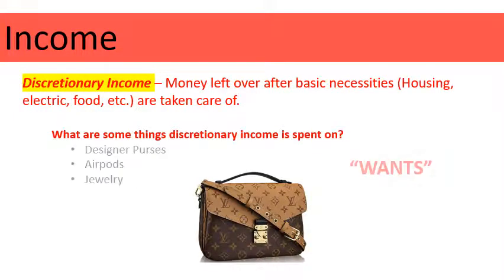Now let's compare disposable income to discretionary income. They sound similar but they're different. Discretionary income is money left over after the basic necessities — housing, electric, food, those types of things — after those are taken care of and paid for. Discretionary income is what we can use to buy our wants, the things we don't necessarily need but would like to have. Examples might be designer purses, AirPods, jewelry. We don't need any of those things to survive, but we want them.